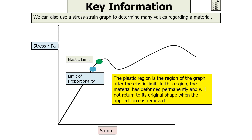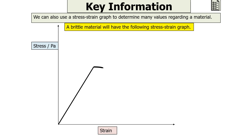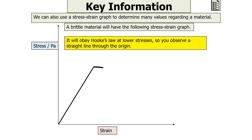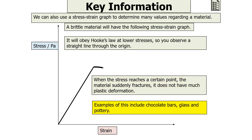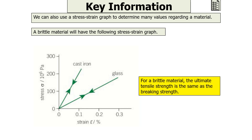A brittle material has a different stress-strain graph. It will obey Hooke's law at lower stresses, showing a straight line through the origin, but when stress reaches a certain point the material suddenly fractures and breaks, showing very little plastic deformation. Examples include chocolate bars, glass, and pottery. For a brittle material, the ultimate tensile strength is the same as the breaking strength, because it breaks before showing any plastic deformation.